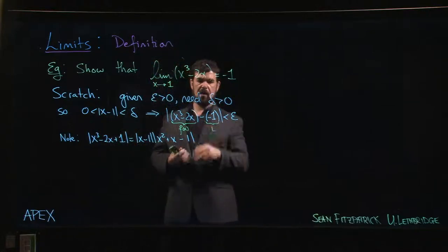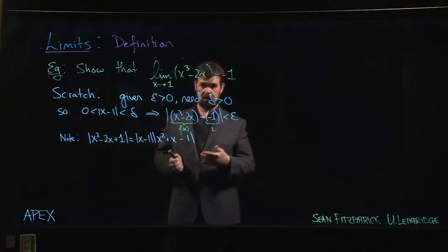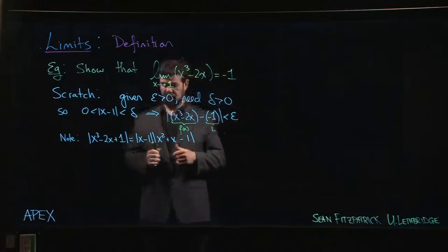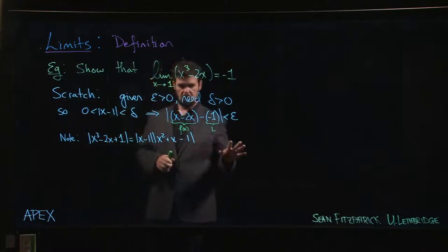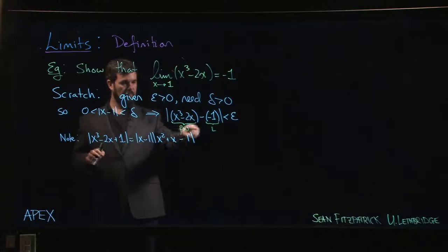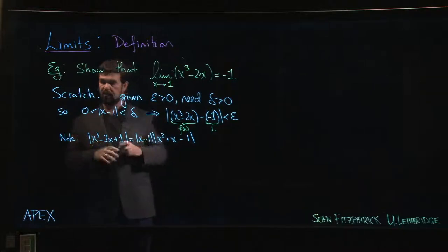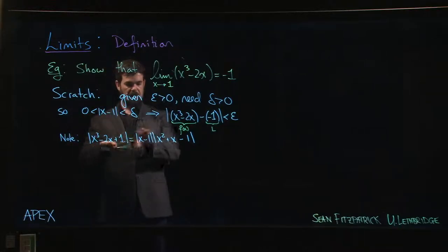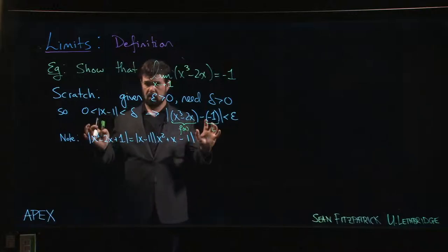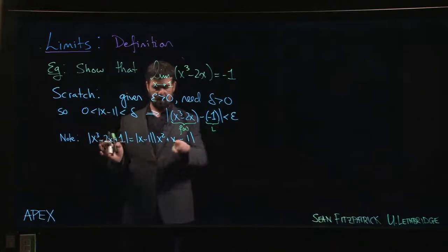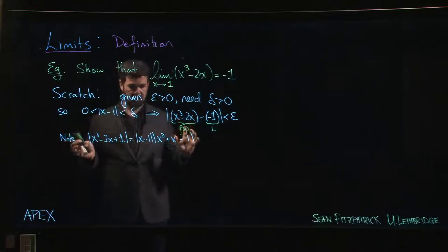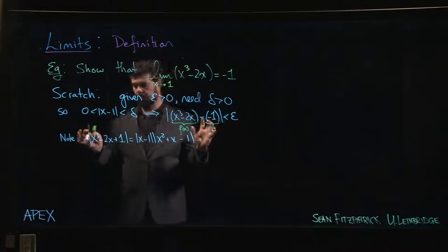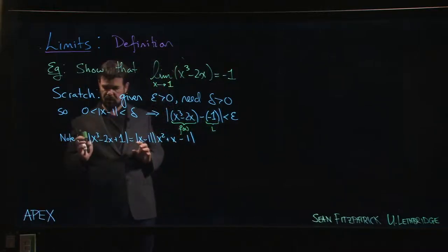Delta we are allowed to choose. We just need to show that one delta exists, and usually we do that by actually choosing one and showing that it works. You start your scratch work by setting up this difference. Here I've simplified — the double negative gives a plus one. One of the steps in the textbook just says 'factor,' and you might be wondering how do they know to factor, how do they know that x minus one is a factor?